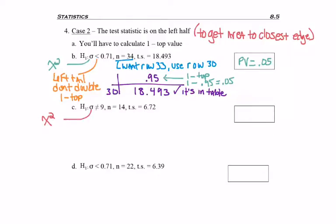Next example. Because I see the symbol sigma, I'm using the chi-squared table. Not equal to means I have a two-tailed test, which means I will be doubling my p-value. I'll be going to row 13, and I'll look for my test statistic of 6.72.